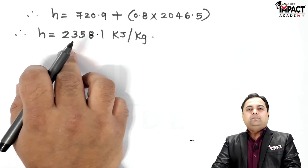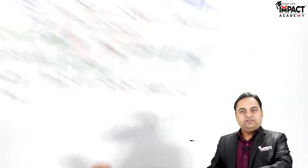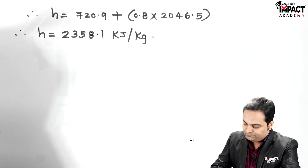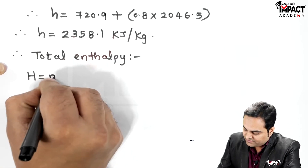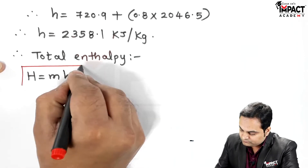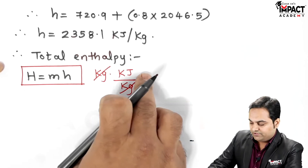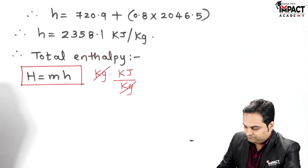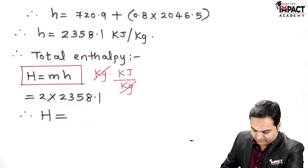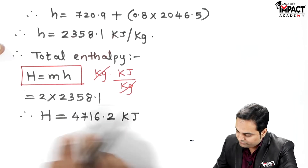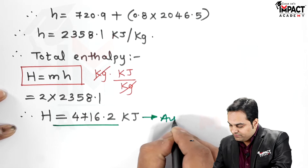The specific enthalpy is 2358.1 kJ/kg. If mass were not given, this would be the final answer. However, since mass is given as 2 kg, I need to find the total enthalpy: H = mass × specific enthalpy = 2 × 2358.1. The units kg and kJ/kg cancel to give kilojoules, so the total enthalpy H = 4716.2 kJ.